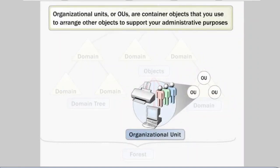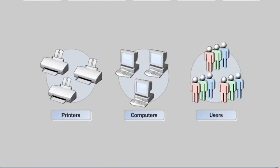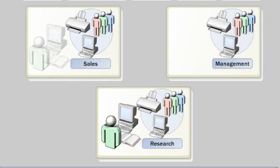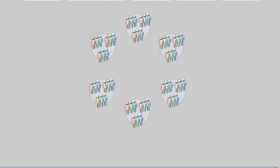Organizational units, or OUs, are container objects that you use to arrange other objects to support your administrative purposes. For example, you can arrange user objects in OUs based on the business unit, geographical location, or a single object class. This way, you make it easier to locate and manage objects. You can also delegate the authority to administer an OU. You can nest OUs in other OUs to further simplify the administration of objects.